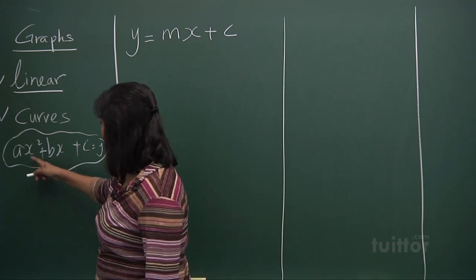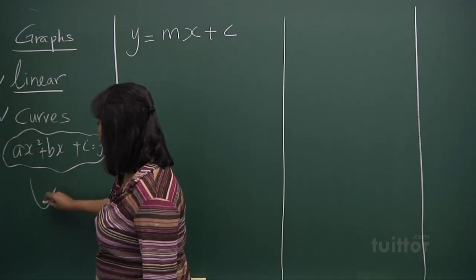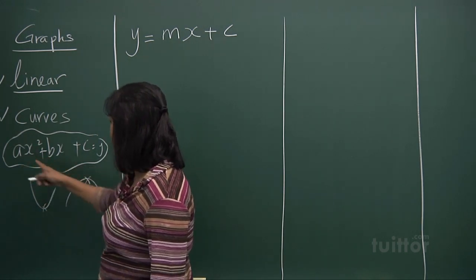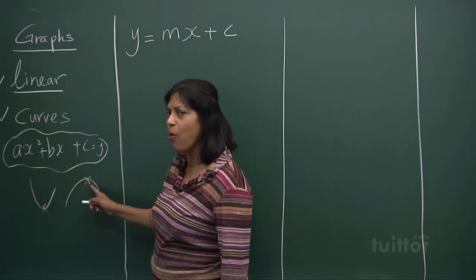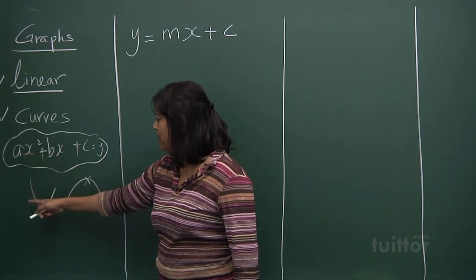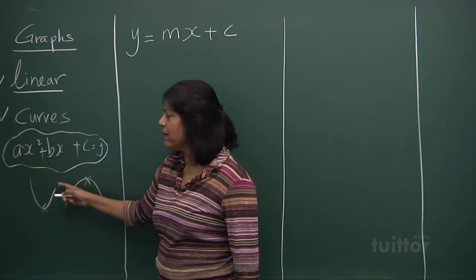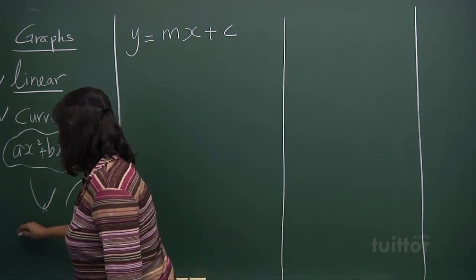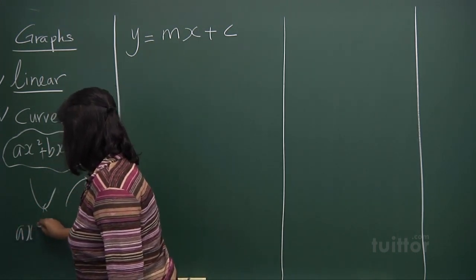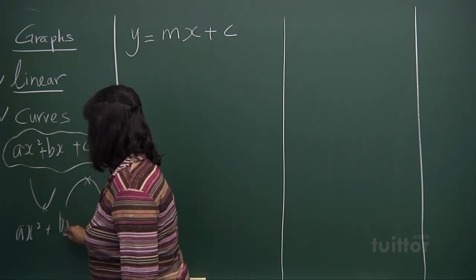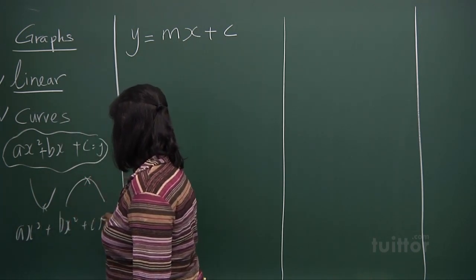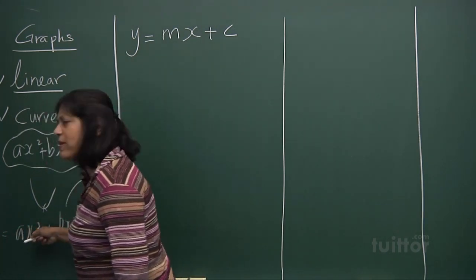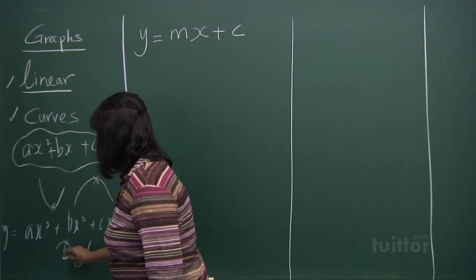The quadratic equation, when the power is 2, there will be one turning point. If a is negative, there will be a maximum point. If a is positive, there will be a minimum point. But if the power is 3, if I have ax³ + bx² + cx + d, there will be 2 turning points maximum.